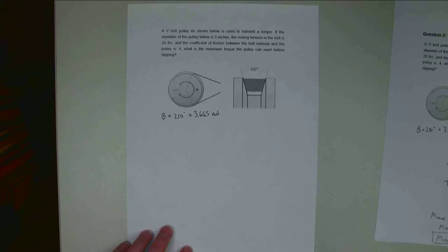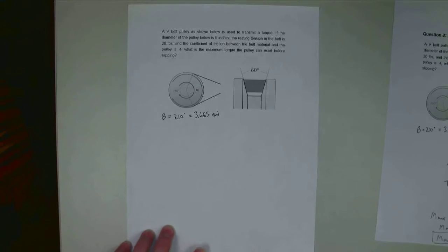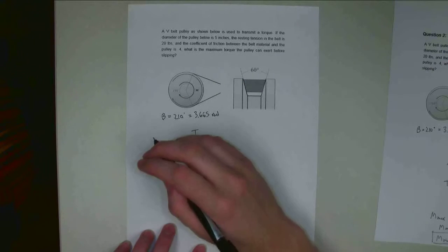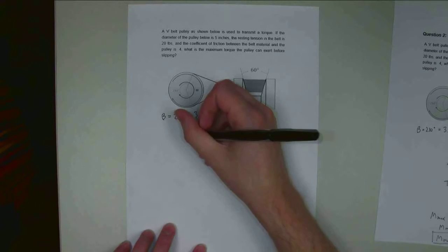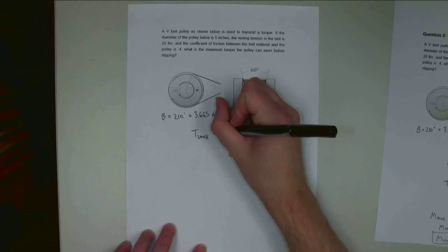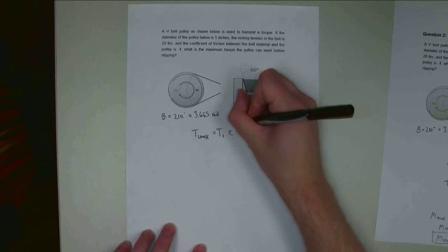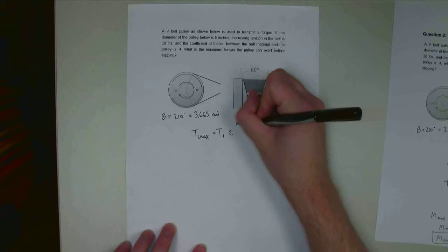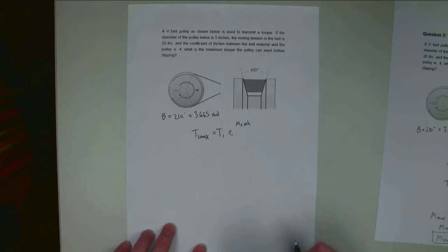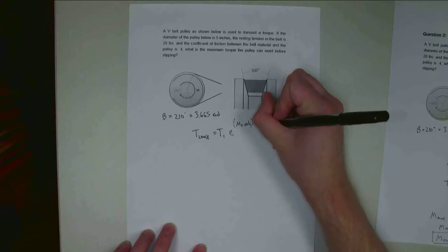And for my belt friction problems, the first step is always going to be to introduce the belt friction difference in tension formula. So T2 max is going to be equal to T1 times E to mu static enhanced. This is since we have a V-belt, it's going to be the enhanced static coefficient of friction times the contact angle beta.